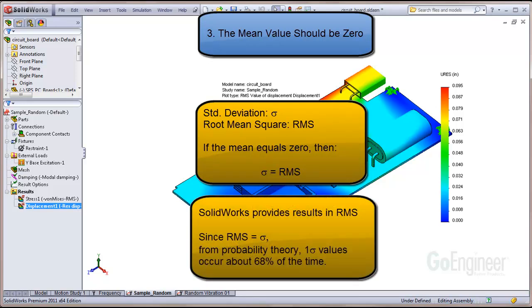Now SOLIDWORKS provides result values in RMS, such as displacement, acceleration, stress, and so on. Since the RMS values are the same as the standard deviation, then you are reporting the one sigma values. And from probability theory, the one sigma values occur in the structure about 68% of the time.